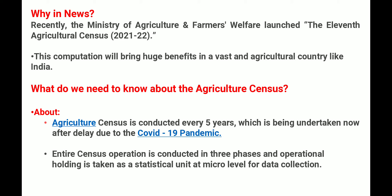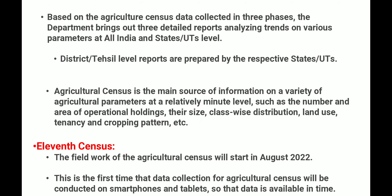What do we need to know about Agriculture Census? Agriculture Census हर 5 साल में conduct होता है, जैसे कि हमारी population count होती है। After a delay due to the COVID-19 pandemic, जो पूरा Census operation है उसको three phases में conduct किया गया, और operational holding को as a statistical unit लिया गया at micro level for data collection। यह Agriculture Census data based है data collection के form में in three phases।